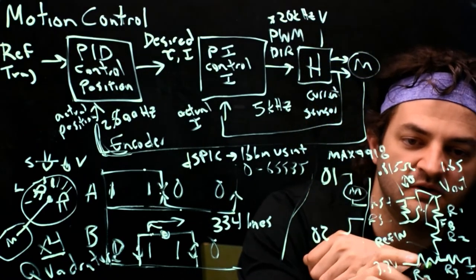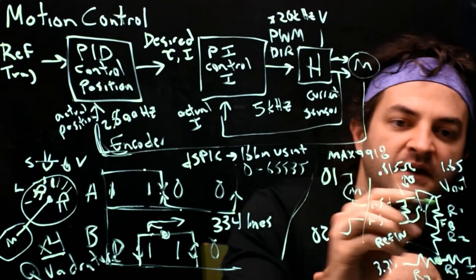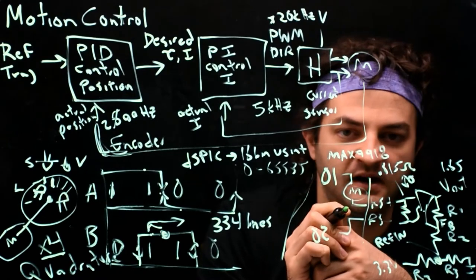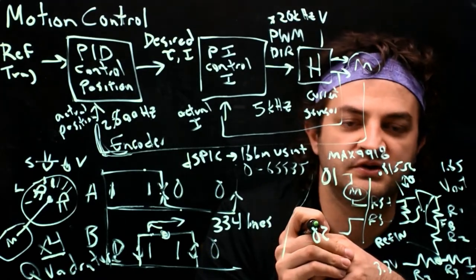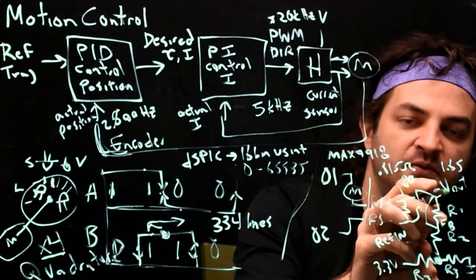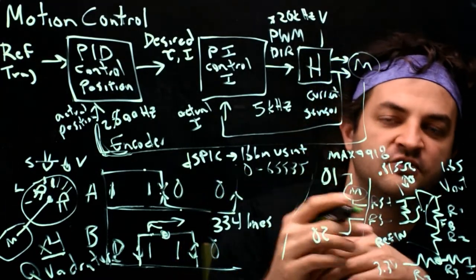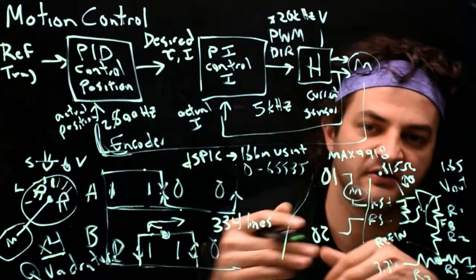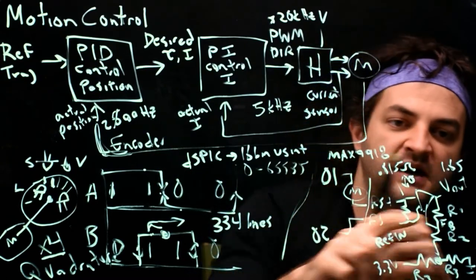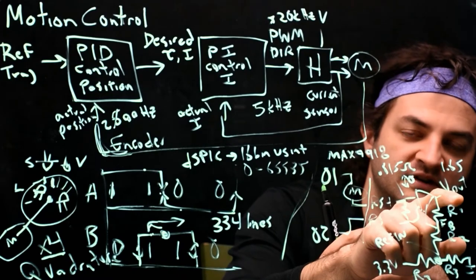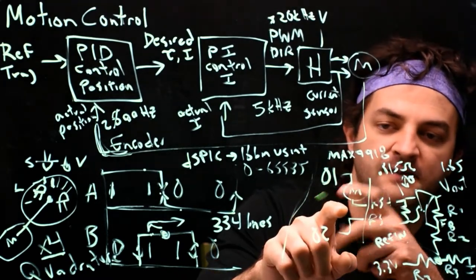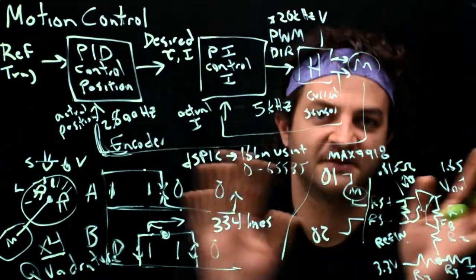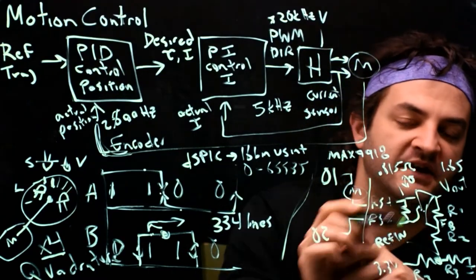So R3s are equal and produce 1.65 V. The overall gain is (R1 + R2) / R2. Depending on the motor's resistance, you choose the gain so that V-out hits 3.3 V just as you reach twice the stall current through the motor, and 0 V at twice the negative stall current. We need a change of 1.65 V — from 1.65 to 3.3 V — when there is twice the stall current. Let's say the gain is something like 100.